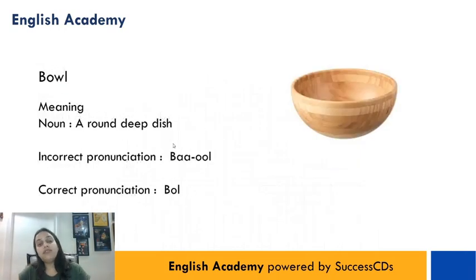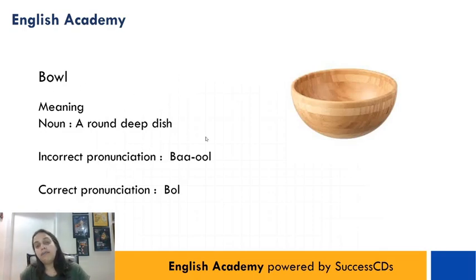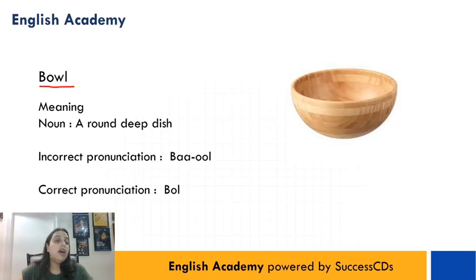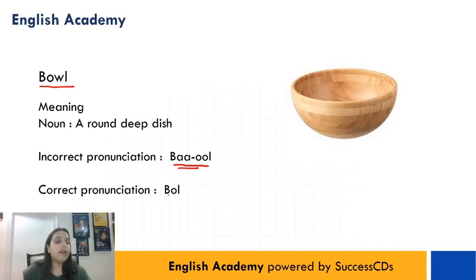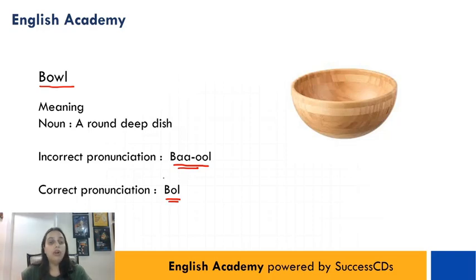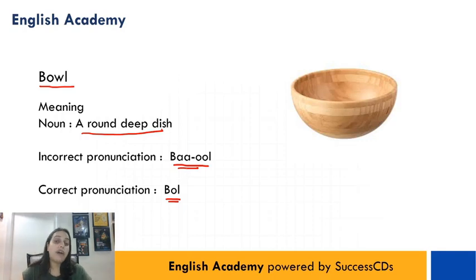The next word is B-O-W-L. Usually log isse pronounce karte hain 'baul', but iski correct pronunciation is 'bowl'. And it means a round deep dish. Toh aapki jo katoori hoti hain, wo 'baul' na hoke 'bowl' hoti hain.